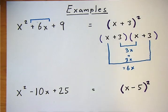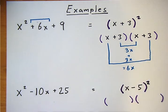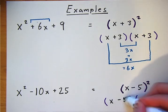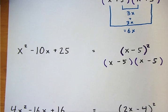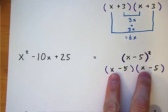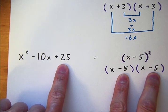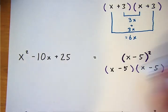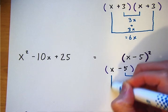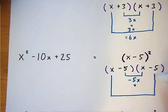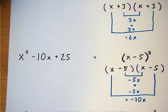The same applies for the second example. That exponent 2 means you have two of these (x - 5)s. X times x gets you x squared. Negative 5 times negative 5 gets you positive 25. And if I multiply my negative 5 times x and add it to x times negative 5, it equals negative 10x, which is your middle term.